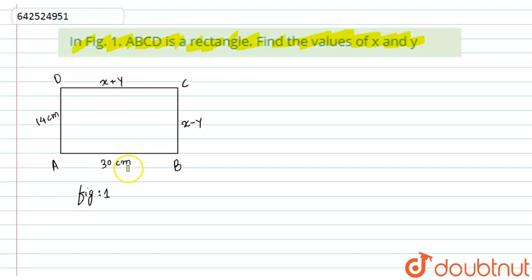If we look at the figure, we have given that ABCD is a rectangle. In that, the DC side is x plus y, BC is x minus y, AD is given to us as 14 centimeter, and AB is given to us as 30 centimeter. Here it is asked to find the value of x and y.